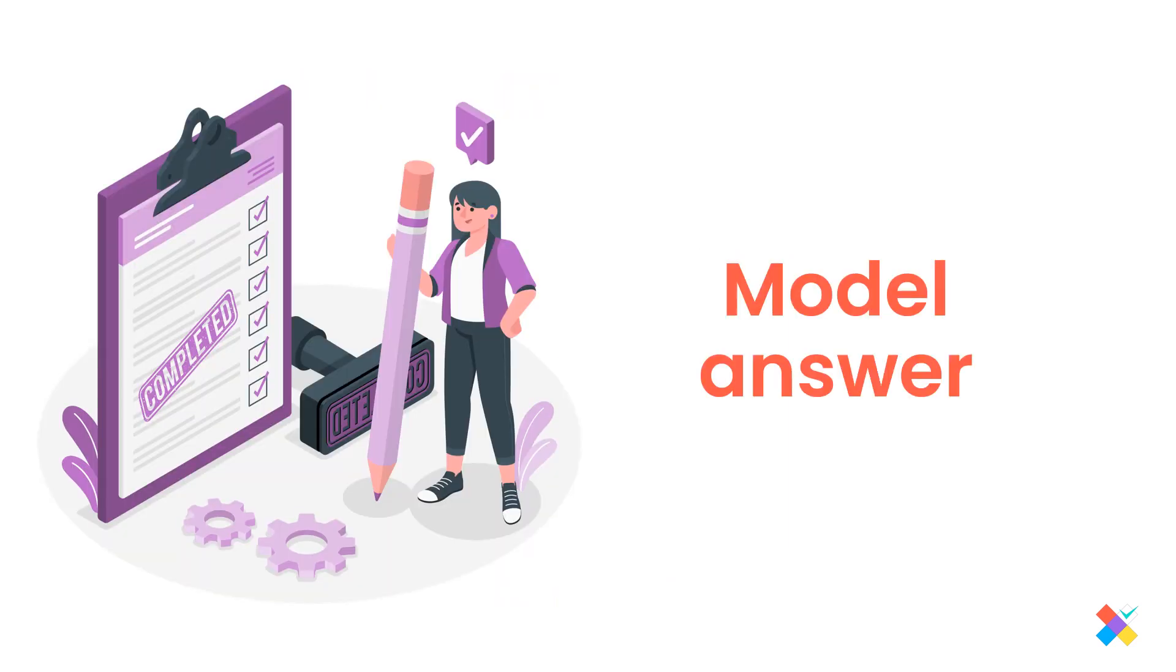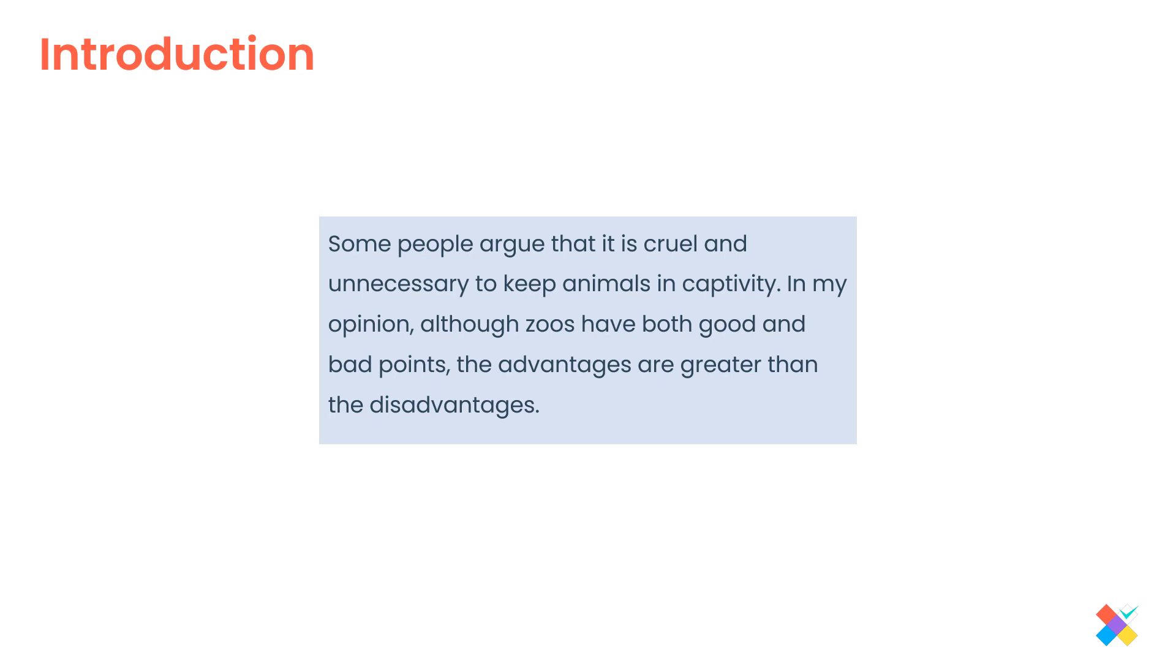Okay, let's get started. We have our model answer. We start with the introduction, obviously. And as you can see, you can introduce the topic by explaining it in your own words. That's called paraphrasing. Some people argue that this is cruel, but in my opinion, this is what I think. And you also summarize your point of view. Although zoos have both good and bad points, the advantages are greater than. Greater than means that I have already decided from my introduction that the advantages outweigh the disadvantages.